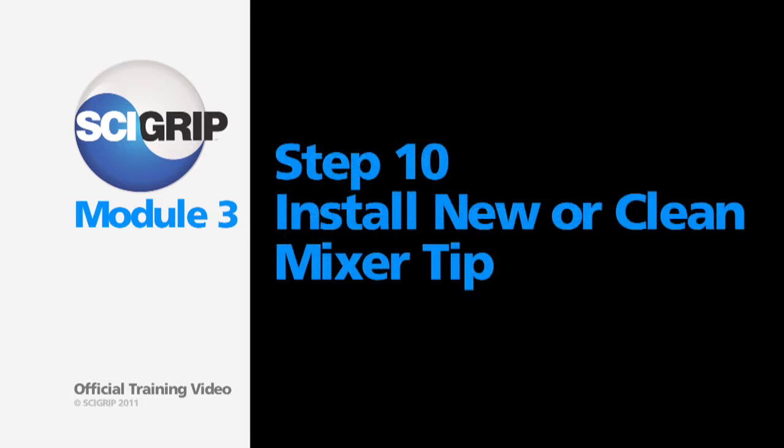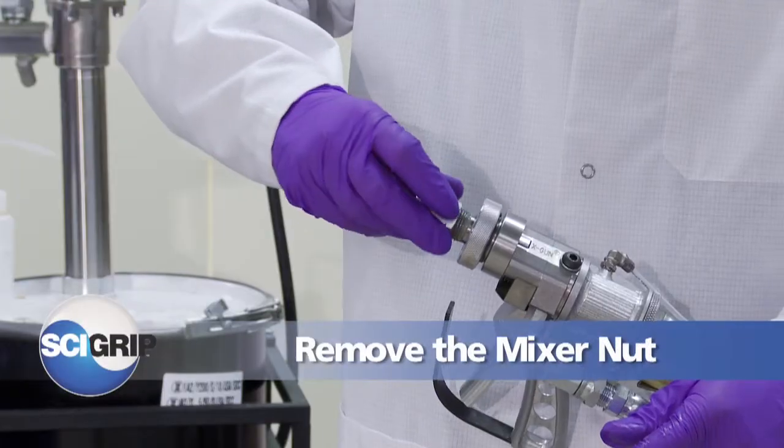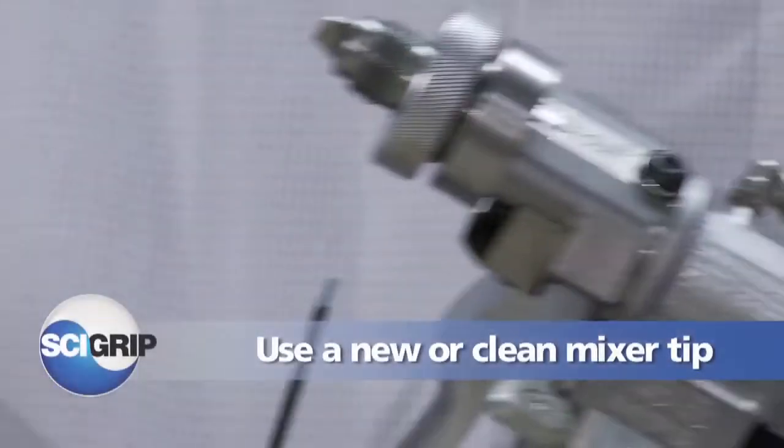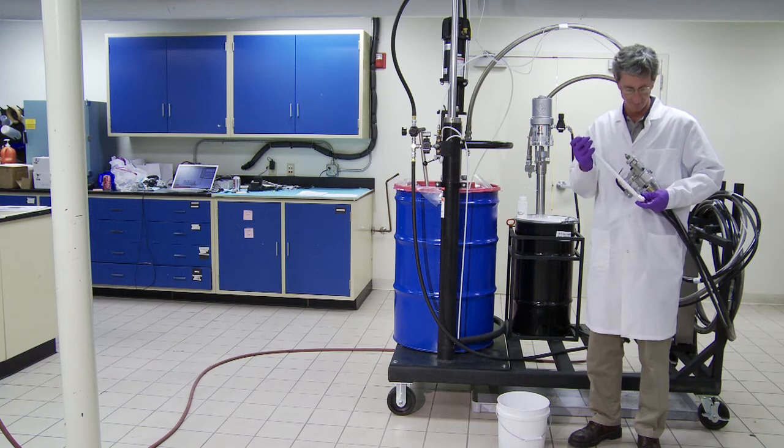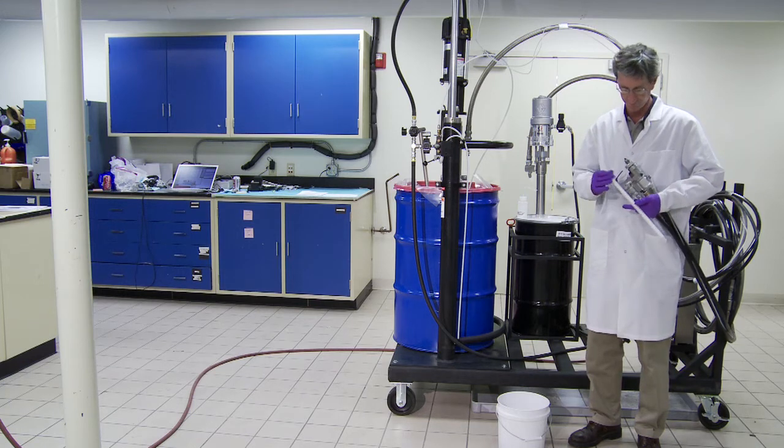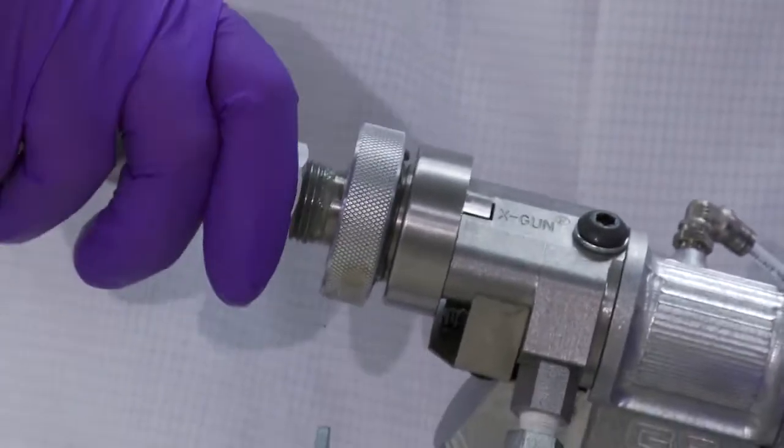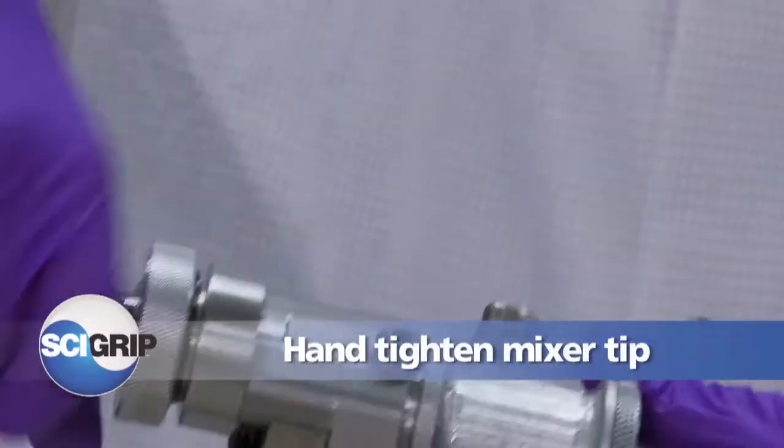Step ten, install a new or properly clean mixer tip. Remove the mixer nut. Take a new or properly clean mixer tip, thread the tip through the nut, and then thread the assembled mixer tip onto the nozzle. Hand tighten.